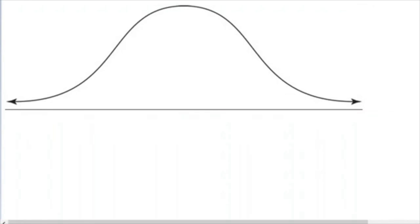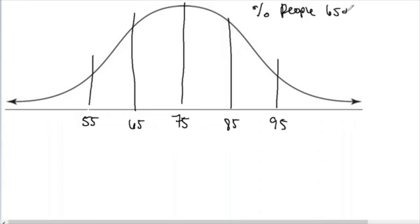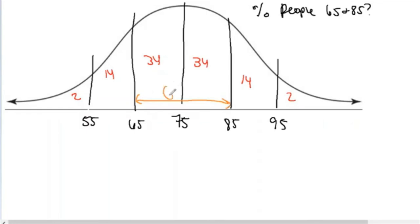Let's reset our picture. The average speed is 75, and we go up in increments of 10: 75, 85, 95 on the right and 65, 55 on the left. Question: what percent of people travel between 65 and 85 miles per hour? Using our 34-14-2 rule, the area we're looking for spans one SD below to one SD above the mean: 34 + 34 = 68%.